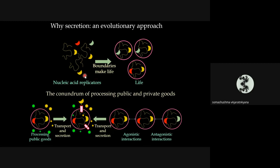To move from self-replicating molecules to what we see as life, the most important thing is to have boundaries. In the absence of boundaries, your replicator enzyme or ribozyme will essentially be offering free services, and any molecule that can replicate itself more efficiently will be selected for, leading to collapse of the system. You need a degree of selfishness — replication coupled to what makes the replicator.